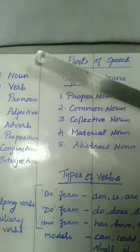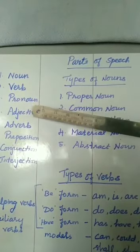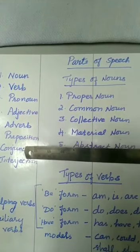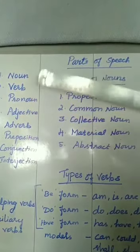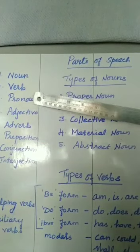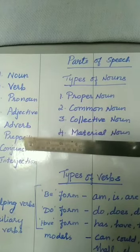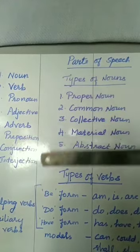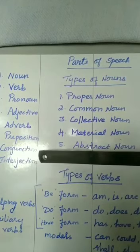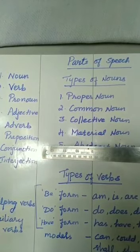Let us see what are the 8 types: noun, verb, pronoun, adjective, adverb, preposition, conjunction and interjection. These 8 parts of speech help us to make a sentence. Without these parts, we will not be able to make any sentence in English. That is why they are called as parts of speech.